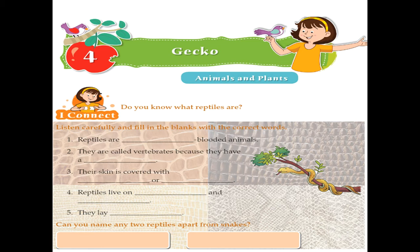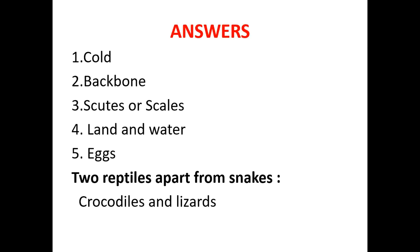Question three: their skin is covered with scutes and scales. Question four: reptiles live on land and water. Question five: they lay eggs. And a bonus question — can you name two reptiles apart from snakes? The answers are crocodiles and lizards. Let's check the answers: one — cold-blooded; two — backbone; three — scutes and scales; four — land and water; five — eggs; and two reptiles apart from snakes are crocodiles and lizards.